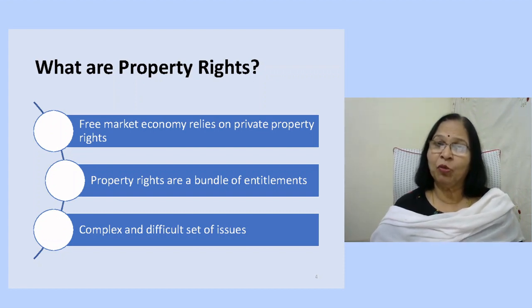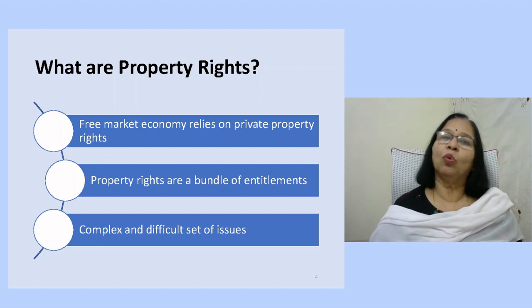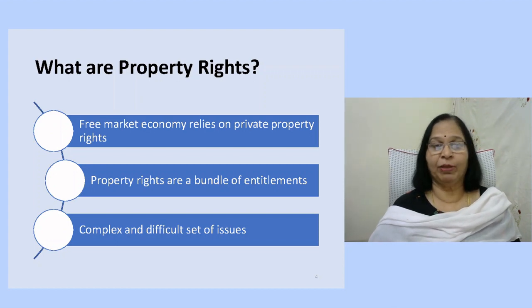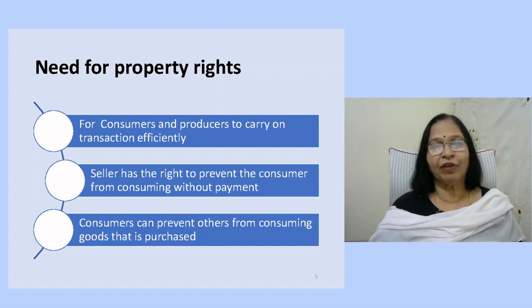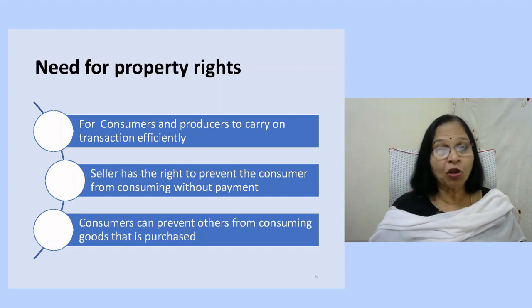Property rights are the most complex and difficult set of issues that any society has to resolve. The free market economy relies on private property rights, which are important in the neoclassical framework within which environmental economics is studied. All economic incentives and disincentives operate within the complete property rights framework. Why should a person take care of a resource or make improvements on it when it does not belong to him?